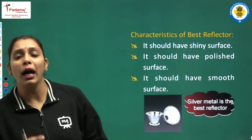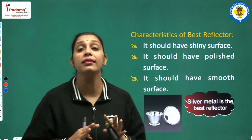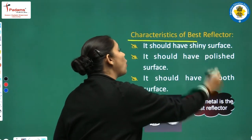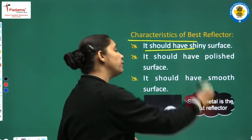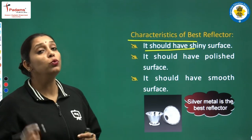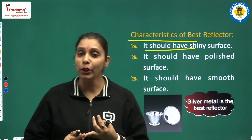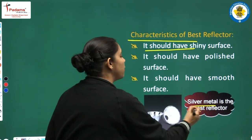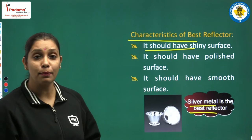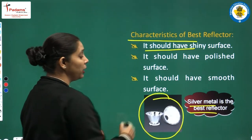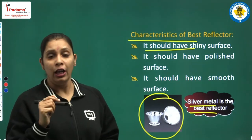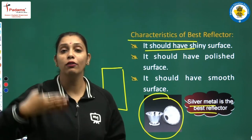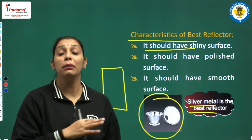Reflection literally needs a surface. The characteristics of the best reflector: it should have a shiny surface, it should have a polished surface, it should have a smooth surface. And you know that silver is the best reflector. In many lights and different types of halogens, the covering inside is of silver color. And our plain mirror, if you have seen the back of it, there is a silver coating — that makes the mirror a reflector.